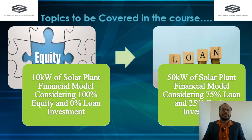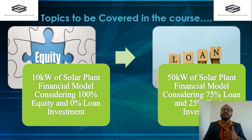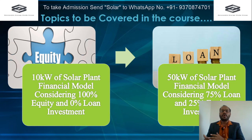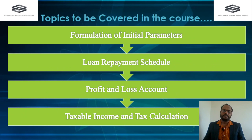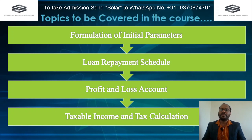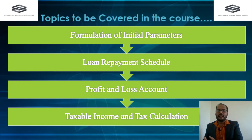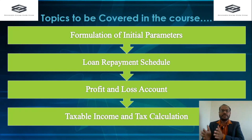The third component is the financial Excel sheet. We'll look at a 10 kilowatt solar power plant financial model considering 100% equity and 0% loan investment, and a 50 kilowatt solar project model with 75% loan and 25% equity investment. In these Excel sheets, we'll cover formulation of initial parameters — grid parameters, tariff charges, tariff acceleration, taxation, depreciation rate, and PPA terms.